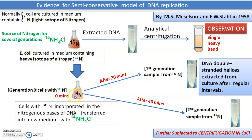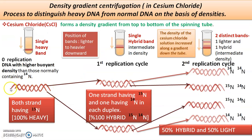They then prepared a fresh culture medium with NH4Cl containing the light isotope N14. A heavy band from centrifugation means both DNA strands have N15. If the parental strands separate and new strands are synthesized incorporating N14 from the new medium, the centrifugation would show intermediate hybrid bands — meaning one strand is the old N15 strand and the other is the newly synthesized N14 strand.